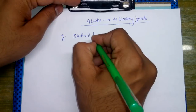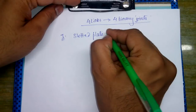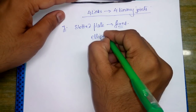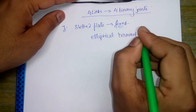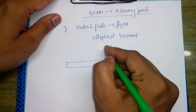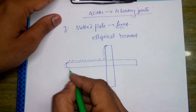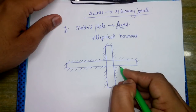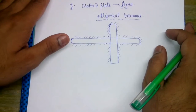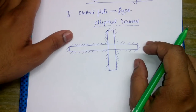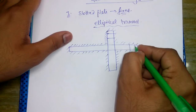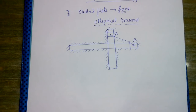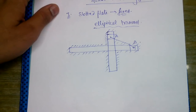When the slotted plate is fixed, the inversion obtained is the elliptical trammel. The fixed parts are shown by hatched lines. The elliptical trammel is used to draw ellipses. There is slider A and slider B, connected together, and they are used to draw ellipses. You can watch videos on YouTube on how the elliptical trammel works.